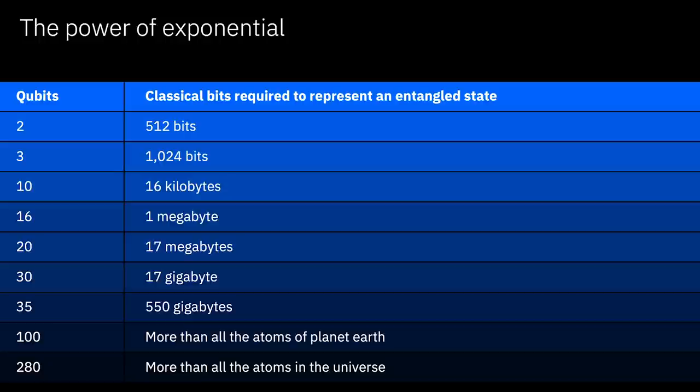And there is a really important relationship between this entangled property and the amount of information that we can process. And this relationship is exponential. What this table shows is the number of classical bits, zeros and ones, that are required to represent that complex entangled state that I just described. And here's an amazing number. By the time you have a hundred perfect qubits that are entangled with one another, if you needed to describe them using zeros and ones, you would need to devote every atom of planet Earth to store those zeros and ones. Clearly, that's not possible. In fact, by the time you have 280 qubits, you will need every atom of the known universe.